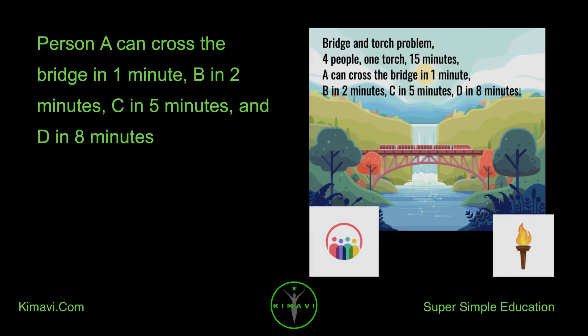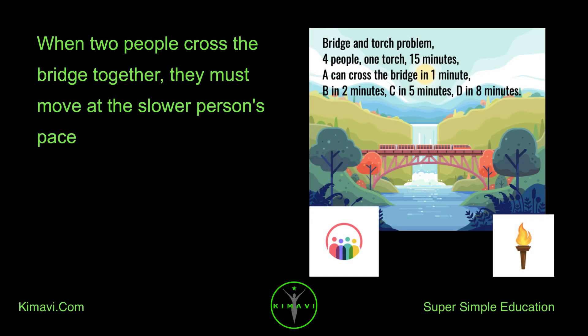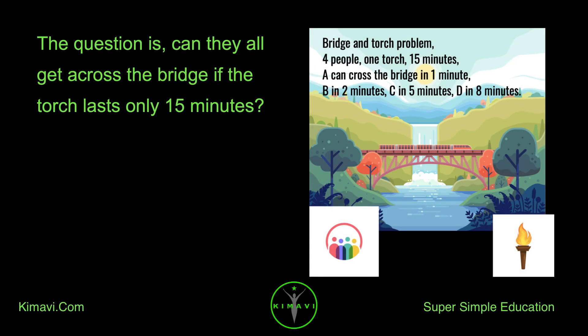Person A can cross the bridge in one minute, B in two minutes, C in five minutes, and D in eight minutes. When two people cross the bridge together, they must move at the slower person's pace. The question is, can they all get across the bridge if the torch lasts only 15 minutes?